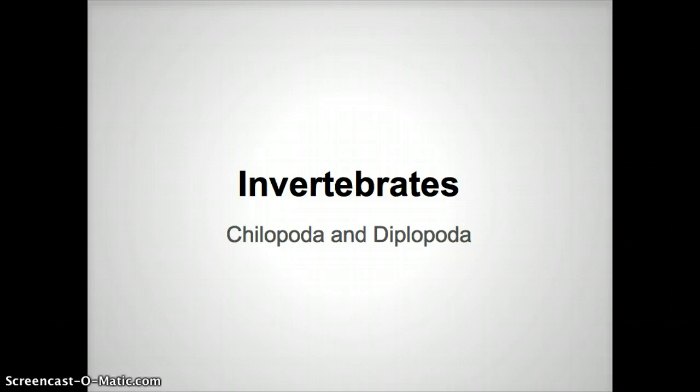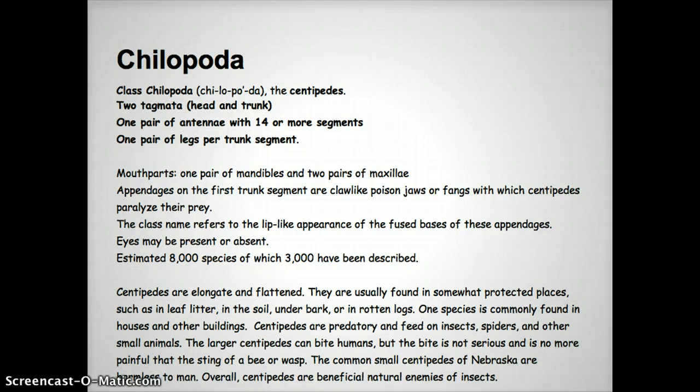Probably the group I know the least about, but we're going to try to go through and get some characteristics of both groups and get you to a point where you can tell the difference pretty quickly. There's really an easy way to tell. So let's start by looking at the slides. This group is divided into two different tagmata — those are the body segments. So we have a head and we have a trunk.